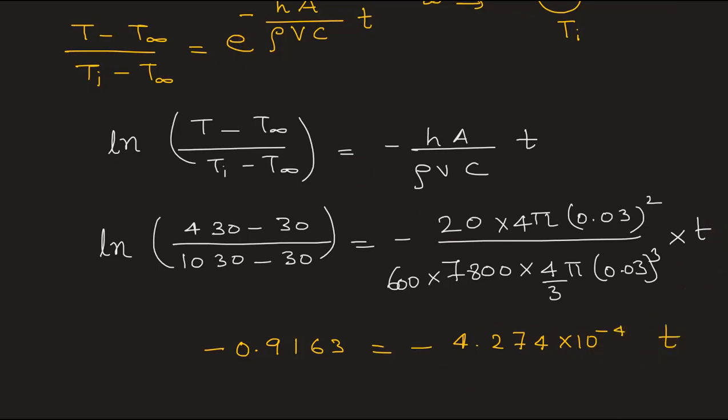This is equal to -4.274 × 10^(-4) × t. So from here we can find the value of t. So t will be equal to 2145.9 seconds, or approximately we can say 2146 seconds.